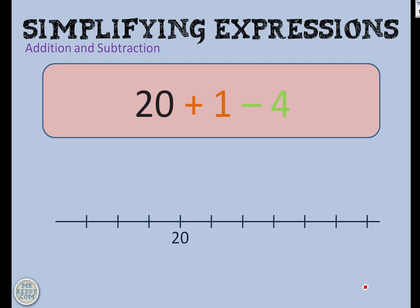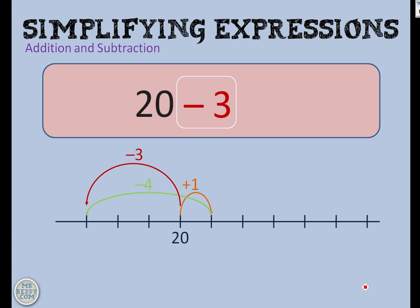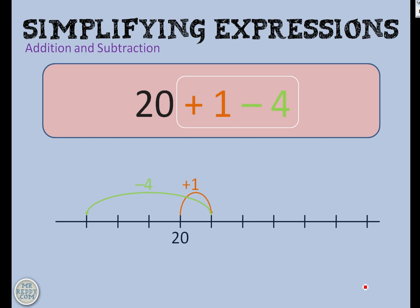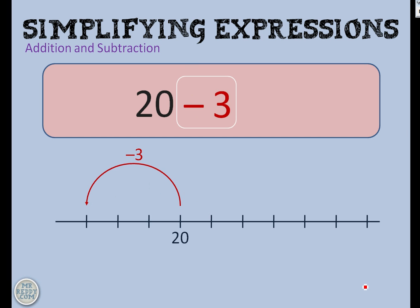Next example: 20 plus 1, take away 4. This is where I find some people running into difficulties. But if you think about it, 20 add 1 and then take away 4 — well, that's just the same as 20 take away 3. So we can simplify that whole calculation to just 20 take away 3. Much easier.